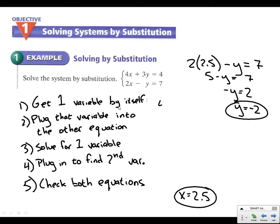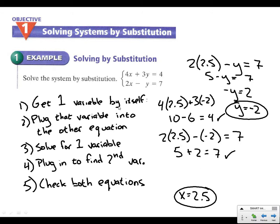And so 5, we can always check both equations by plugging back in. So let's check it again. 4 times 2 and a half plus 3 times negative 2. That is 10. This is negative 6. Does that equal 4? Yes, it does. Let's check this other one. 2 times 2 and a half minus negative 2. Does that equal 7? This is 5. This is plus 2. Does that equal 7? Yes, it does. So we've checked both options. We know that we are correct. Y is negative 2. X is 2 and a half.